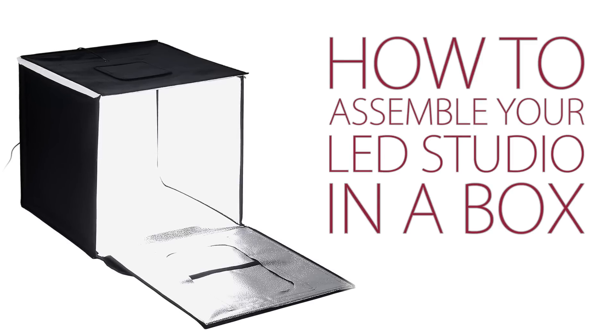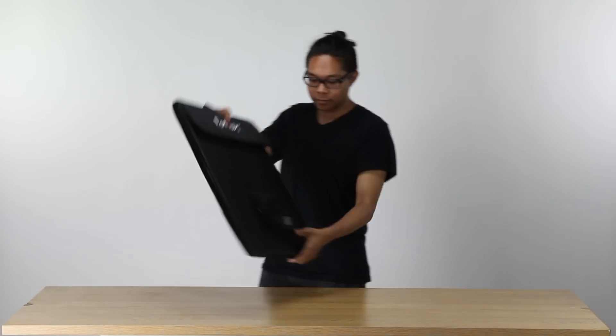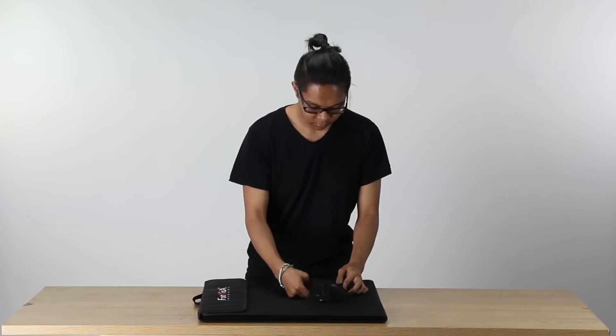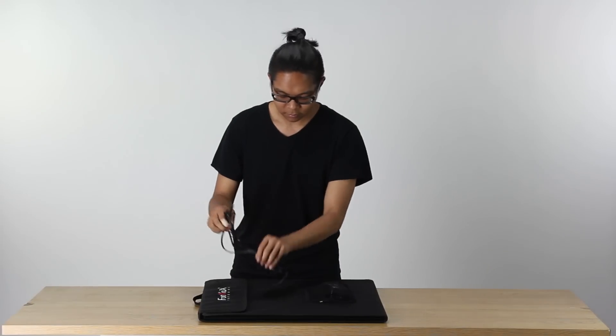Here's how to assemble your LED Studio in a Box. Start by laying the case logo side up on a flat surface. Remove the power cables from the pouch and set them to the side.